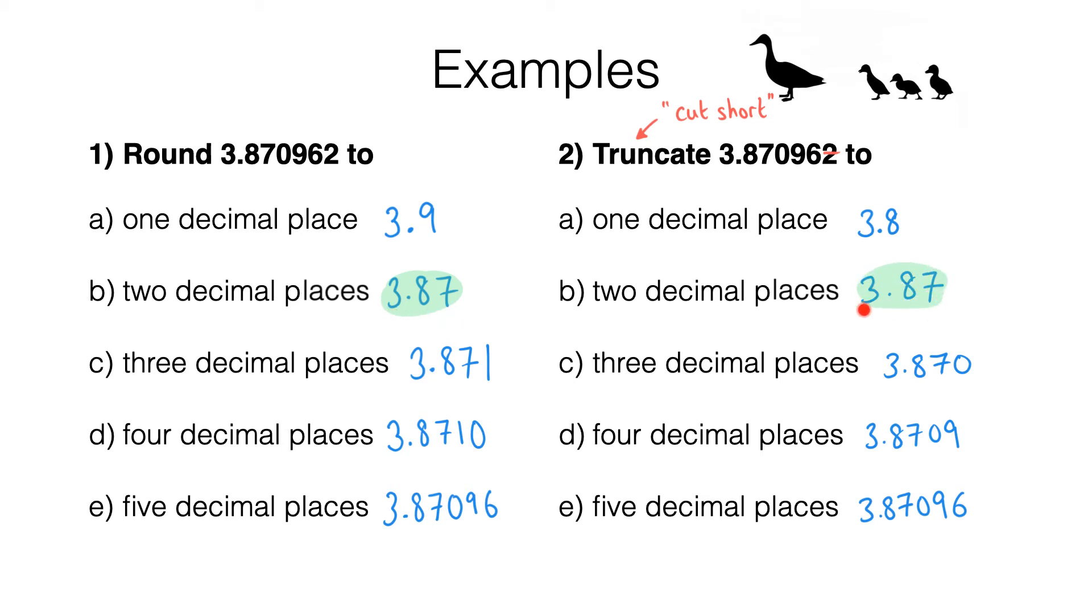That's because the digit in the third decimal place is less than five. In those cases, we discard all subsequent digits to get our rounded answer, which gives the same result as truncation.